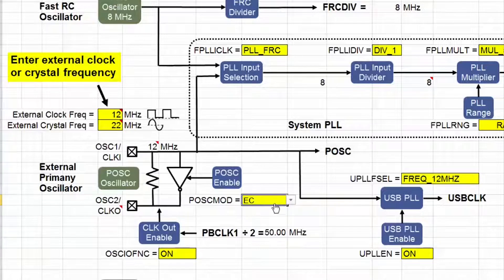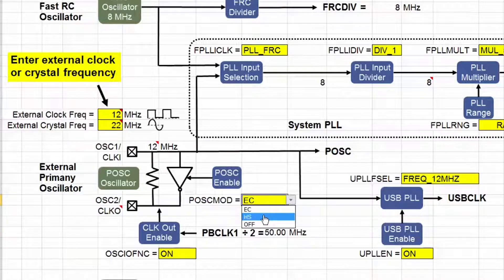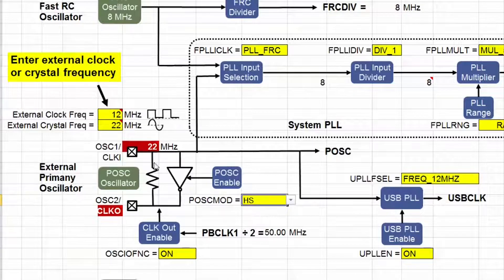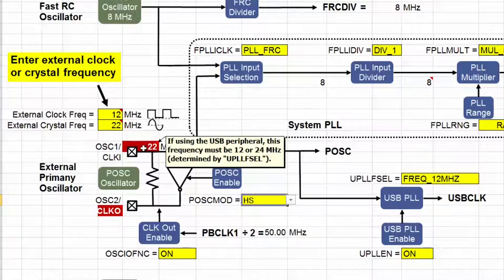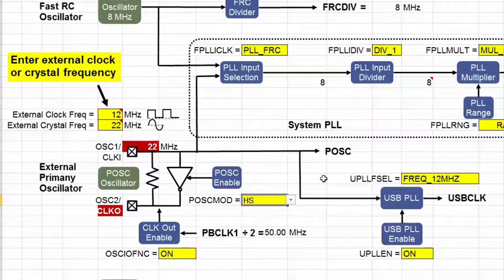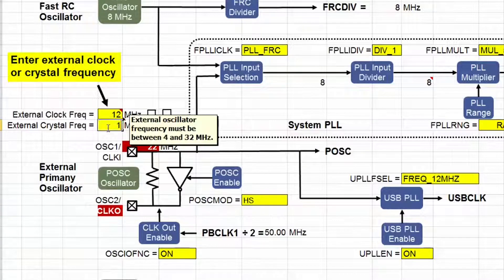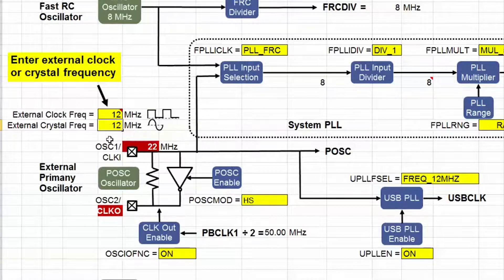If I change this primary oscillator mode setting to expect a high speed crystal, you will see the cell turn red, indicating this setting is not valid. According to the datasheet, and this little message box here, the input frequency must be either 12 or 24 MHz if I'm using the USB peripheral. If I change the input frequency to 12, one of the red boxes disappears.